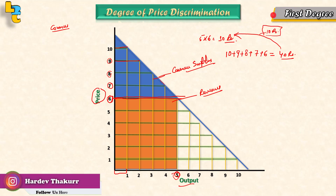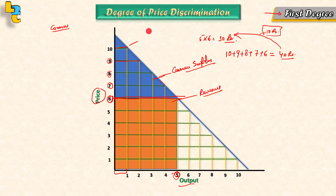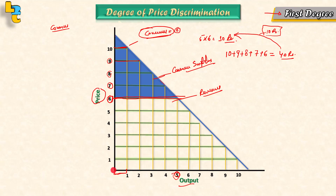In the case of first degree price discrimination, our producer gains all the consumer surplus. The producer charges every consumer the maximum they are willing to pay. So the consumer surplus becomes zero. If the consumer's first unit is worth 10 rupees, the producer charges exactly 10 rupees. For the next unit, the consumer is charged accordingly.